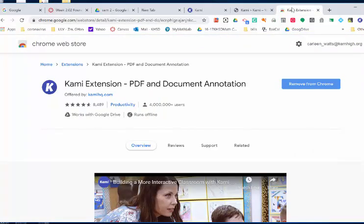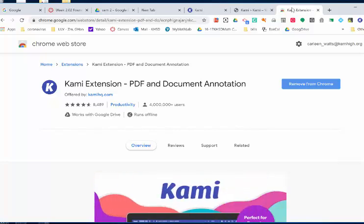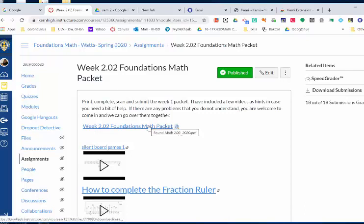So the first thing you need to do is download the Chrome extension for Kami, and then go to the assignment, download the assignment into your Google Drive.